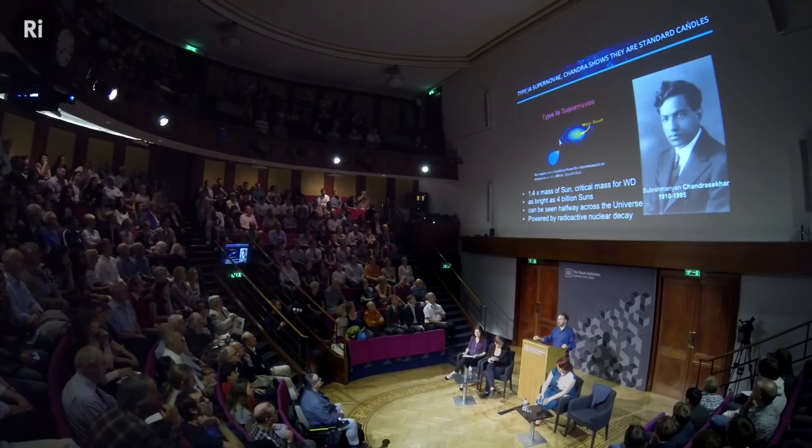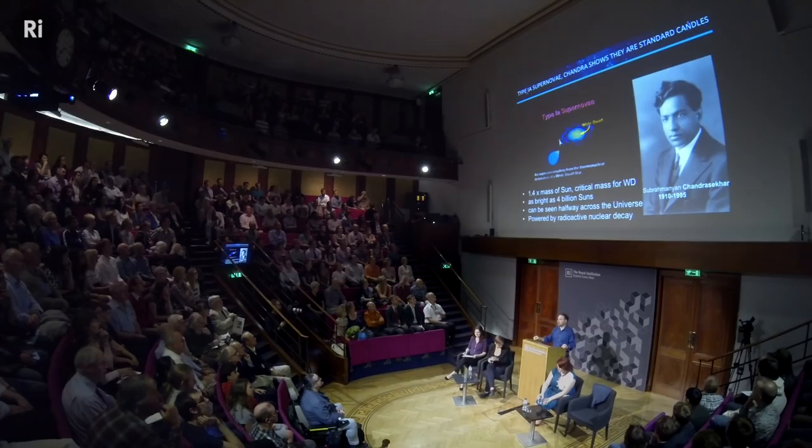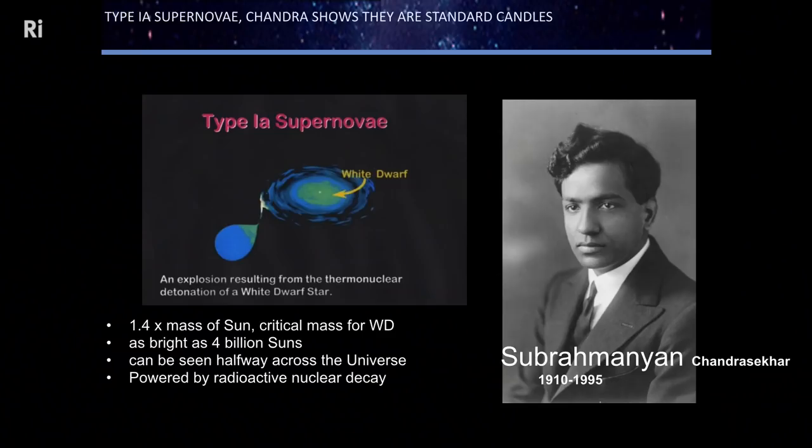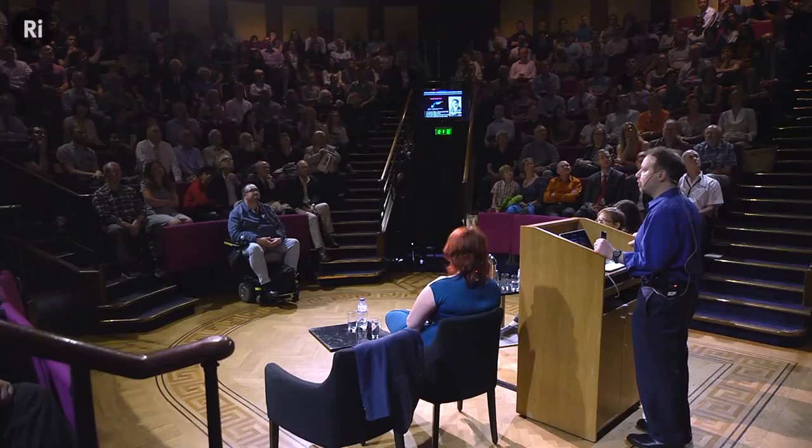Not just any kind of supernova will do. There's a special class of supernovae, first explained by the Indian astrophysicist Chandrasekhar, who won the Nobel Prize for this work. He explained how stars of a certain type—called a white dwarf star—can only hold themselves up against the crushing force of gravity up to a certain mass, now known as the Chandrasekhar limit. When a star becomes more massive than 1.4 times the mass of our sun, you get a runaway thermonuclear explosion. It's like nature's own standard candles—they all blow up at just about the same mass, so they have the same luminosity. When one of these explodes, we can see it halfway across the universe—they are as bright as about four billion suns.